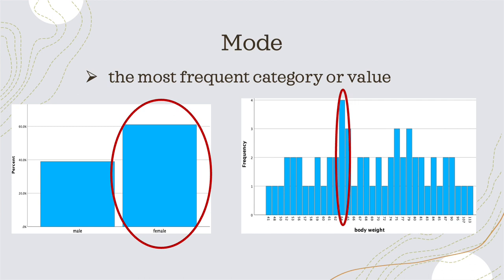We want to find where the center of the data is. The mode is a measure that indicates where the most frequent category or the most frequent value is, as we can see in the examples in the presentation.